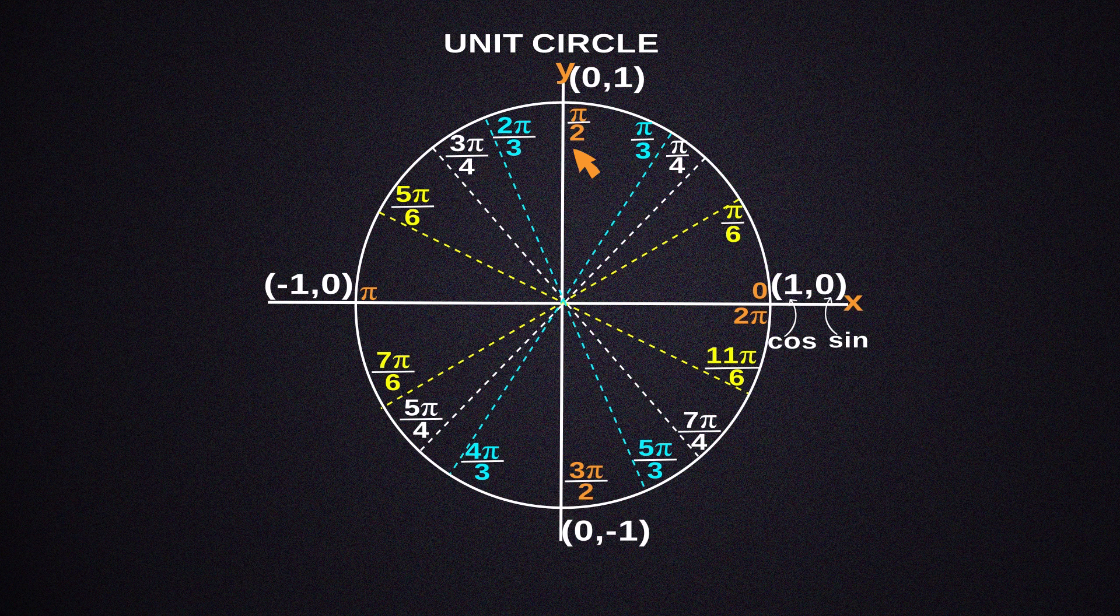Moving to the top of the circle is π/2. We have the coordinates (0,1) since the y distance is exactly one unit and the x distance is 0. Cos is equal to 0 and sine to 1.